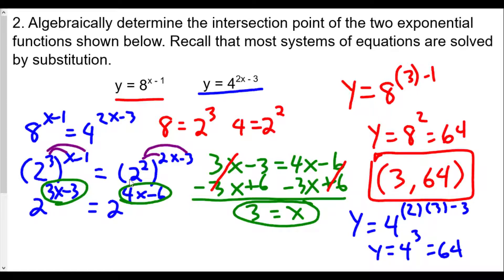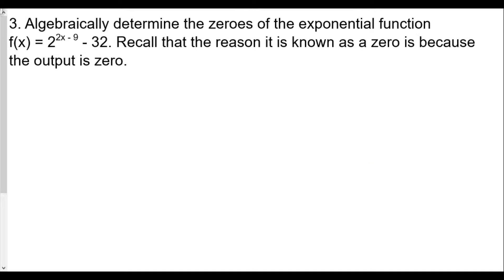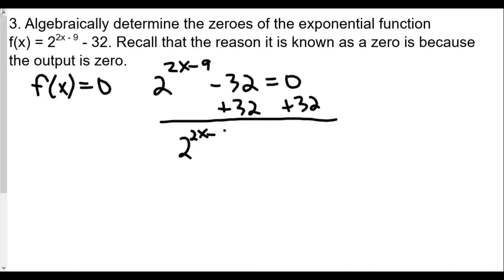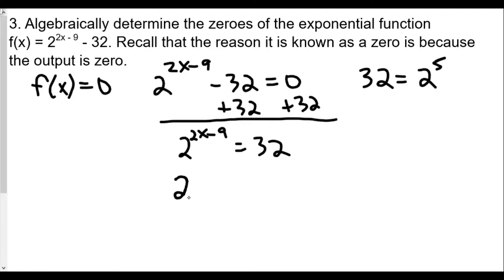Question 3: algebraically determine the zeros of the exponential function f(x) equals 2 raised to (2x minus 9) minus 32. Recall that a zero means the output is zero, so we set f(x) equal to zero. We set 2 to the (2x minus 9) minus 32 equal to zero, then add 32 to both sides, giving 2 to the (2x minus 9) equals 32. Since 32 equals 2 times 2 times 2 times 2 times 2, we can write this as 2 to the 5th power.